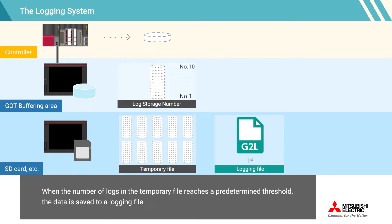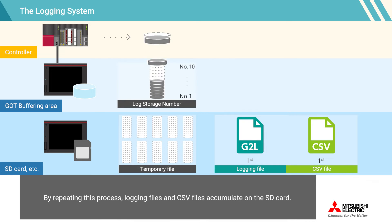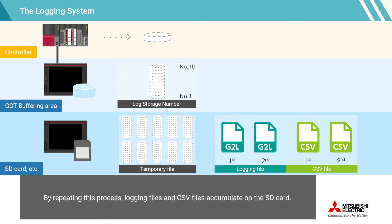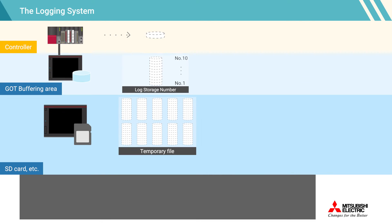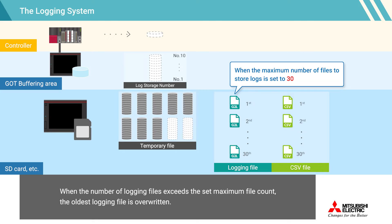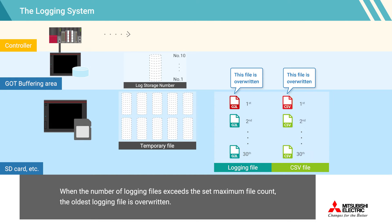When the number of logs in the temporary file reaches a predetermined threshold, the data is saved to a logging file. At the same time, it is also possible to create and save text data such as CSV files. By repeating this process, logging files and CSV files accumulate on the SD card. When the number of logging files exceeds the set maximum file count, the oldest logging file is overridden.